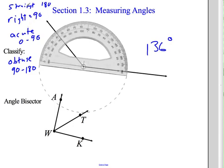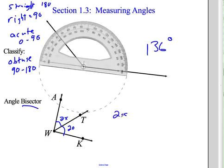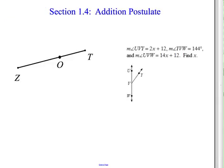Just like a midpoint cuts a segment in half, an angle bisector cuts an angle in half. So if a bisector divides an angle, the two resulting angles are congruent. For example, if one part is 2x and the other is 20, you set 2x equal to 20, solve for x, and get x equals 10.